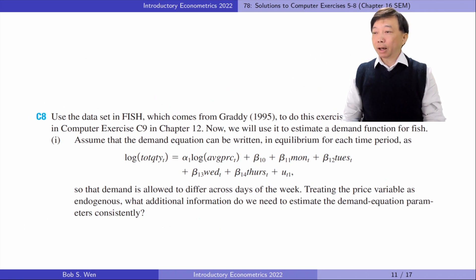Let's solve computer exercise 8. In part 1, assume that the demand equation can be written in equilibrium for each time period as follows, treating the price variable as endogenous. What additional information do we need to estimate the demand equation parameters consistently? We need some supply shifters as the instrumental variables for the endogenous price variable. The supply shifters could be the weather on the ocean that affects fishing.